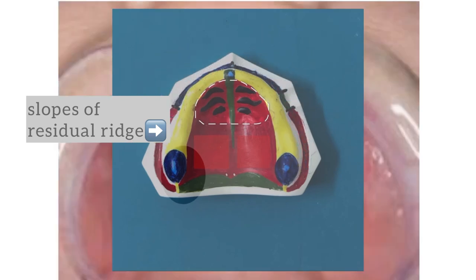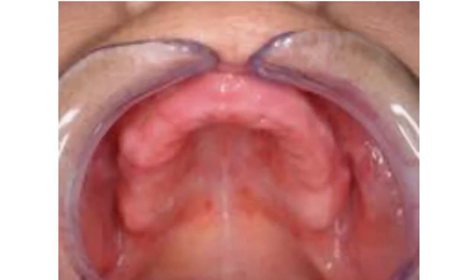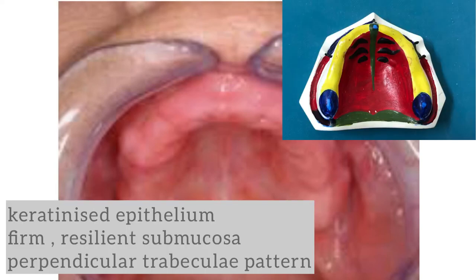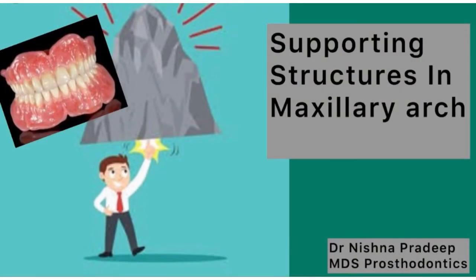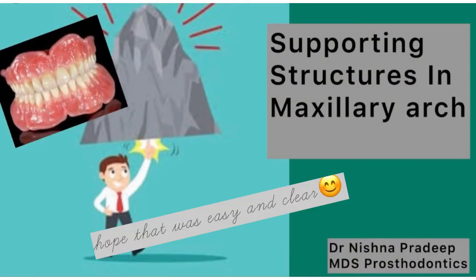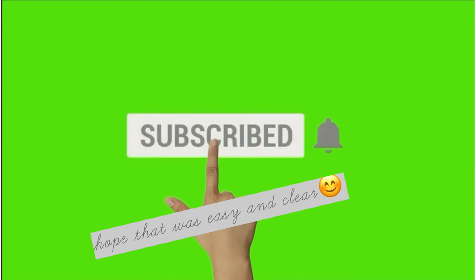All these structures are capable of providing support because of common features: the mucosa is masticatory mucosa having keratinized epithelium, the submucosa is firm and resilient and firmly attached to the underlying bone, and the trabecular pattern in the bone is perpendicular to the direction of occlusal forces. Next I'll be back with the relief areas in the maxillary arch — until then, take care.